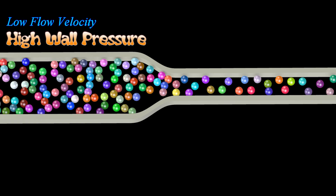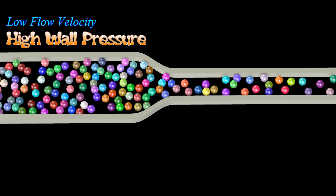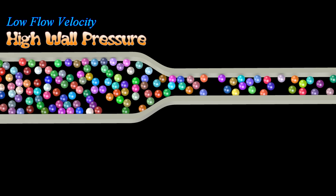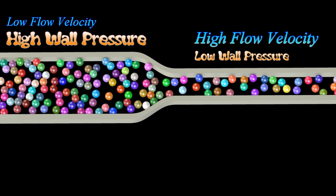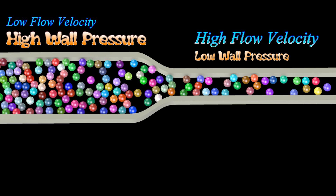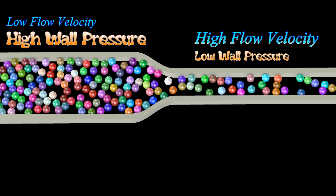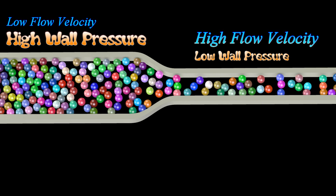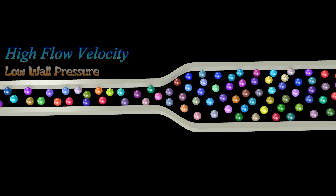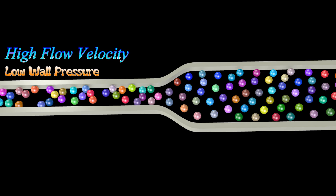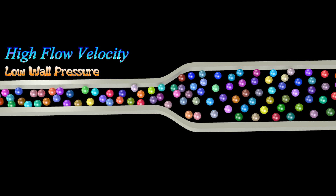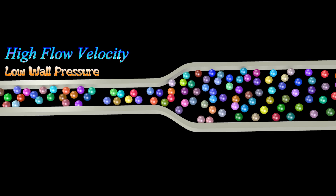The explanation typically given is that in order for the velocity of a fluid to increase as it enters the narrow section of the pipe, the pressure inside the narrow section has to be smaller. The larger pressure before the narrow section allegedly creates a net force pushing the fluid into the narrow section as it enters, causing the velocity of the fluid to increase. The larger pressure after the narrow section allegedly creates a net force trying to push the fluid back into the narrow section as it exits, causing the velocity of the fluid to decrease.